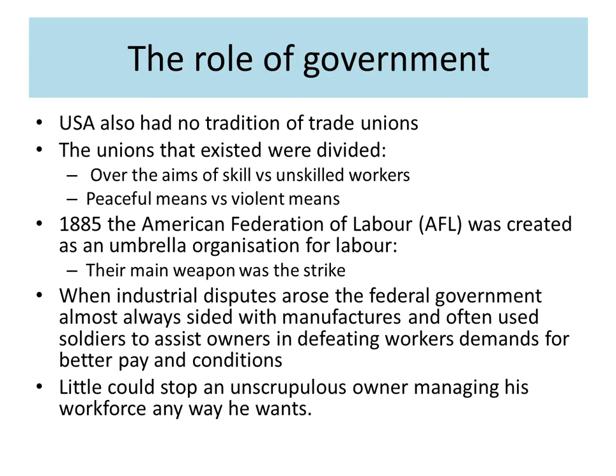The AFL is an important organization — an umbrella for all labor across the United States. Their main weapon was to get people who feel they're not making enough money, that their working conditions are poor, or that they're working too long hours, to go on strike — withhold their labor from the company until the company decides they need to pay for that labor. When industrial disputes or strikes arise, the federal government is usually faced with a massive problem, and it almost always, throughout the Gilded Age, sides with manufacturers. Very importantly, you see the government often using soldiers to assist owners in defeating workers' demands for better pay and conditions.